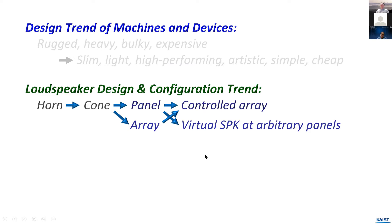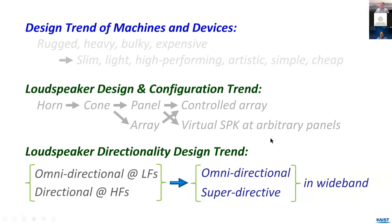In the viewpoint of the speaker, it initially started from the moving dynamic system with the horn, but now it's changed to the horn system which is usually seen in the market. Now some high-end speakers have changed to the panel type, and array configuration has become very important. Not just a predetermined shape, but any plate system used as a cover of the machine, wall of a structure, or even a desk can be converted into an arbitrary virtual speaker with some control. The most important thing these days is the directionality of the speaker system.